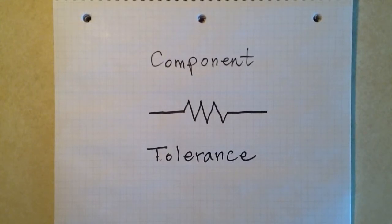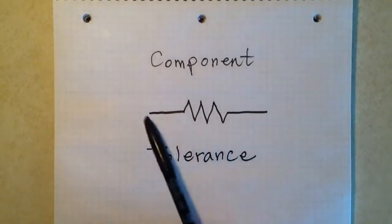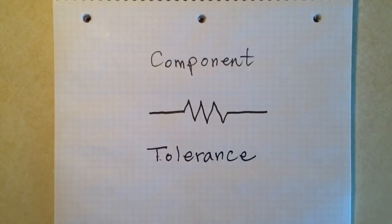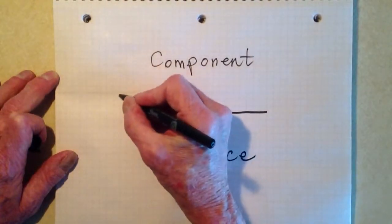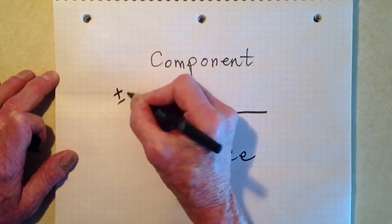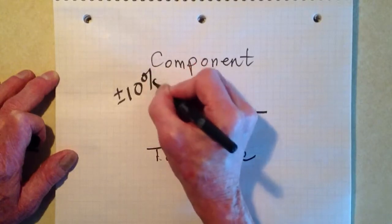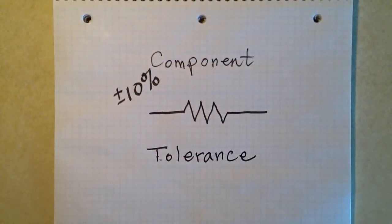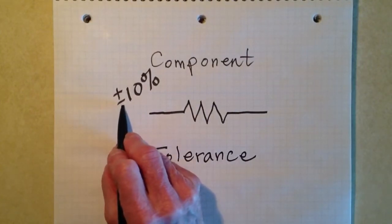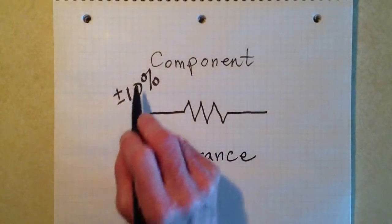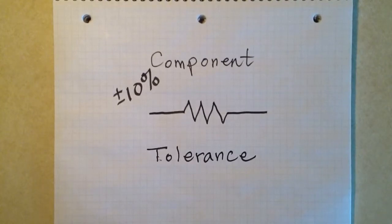You've probably heard this term. If you go into a Radio Shack store, for example, and buy a resistor, it's going to have a certain rated tolerance, meaning margin for error. Typically, the tolerance of a resistor that you buy off the shelf is plus or minus 10% of its rated value. That's what this little plus or minus sign here means. Plus sign with a little dash underneath it means plus or minus.